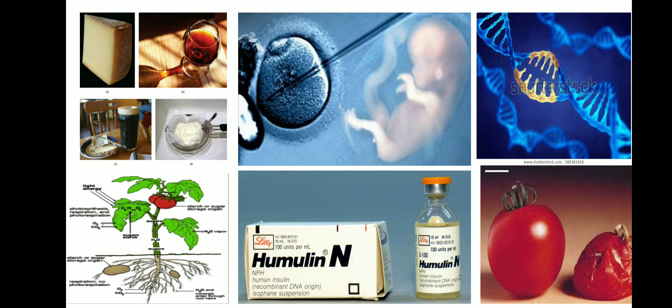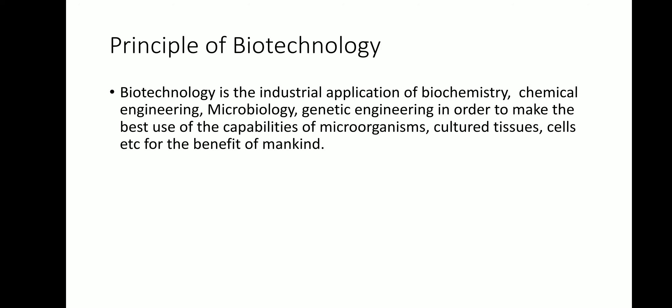Now we discuss the principles of biotechnology. It is the industrial application of biotechnology, involving fields like biochemistry, microbiology, genetic engineering, and chemical engineering. Biochemistry is the study of proteins, carbohydrates, enzymes, lipids, etc. Microbiology is the study of various microorganisms. Genetic engineering means modifying and manipulating genes artificially. Chemical engineering involves using chemicals to cut and ligate DNA. These applications make the best use of capabilities of microorganisms and cultured tissue cells for the benefit of mankind.